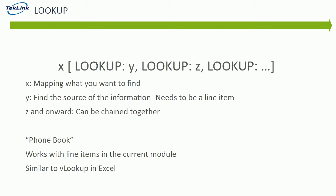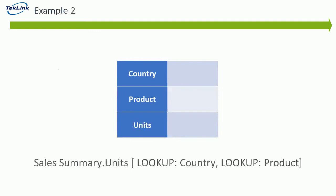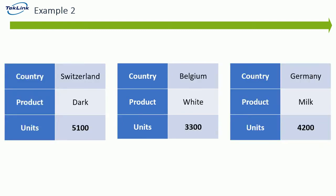You are able to look up more than one source at the same time, which would be the case in our example. All of the sources need to be line items in the current module. A lookup works similarly to a phone book, where you know a piece of the information but you would like to know more. It works similarly to VLOOKUP in Excel as well. Going back to our example, this formula is going to be put into our target module, where we want to find the units sold from our sales summary module based on the country and product put into this module. Our end result will look something like this, where inputting information into the first two rows will automatically fill in the units sold based on the original table.